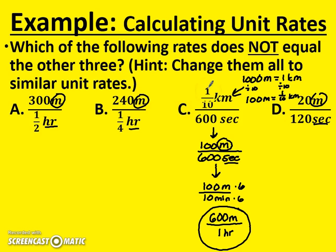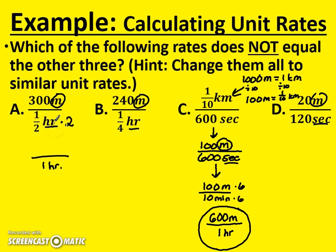Remember, we're looking for which one is not the same as the other three. Let's go to Option A. Option A is already in meters and hours, but it's half an hour — not a unit rate yet. How many halves does it take to make a whole? Two halves make a whole. So one half an hour times two is one hour. If we multiply the half hour by two, we need to multiply three hundred by two, and we get six hundred meters in one hour. So Options A and C are already the same, meaning our answer will be the one not equal to six hundred meters per hour.